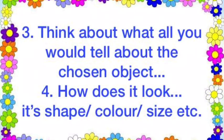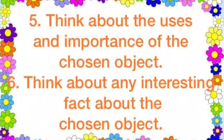Number three: think about what all you would tell about the chosen object. Number four: how does it look — its shape, color, size, etc. Number five: think about the uses and importance of the chosen object. Number six: think about any interesting fact about the chosen object.